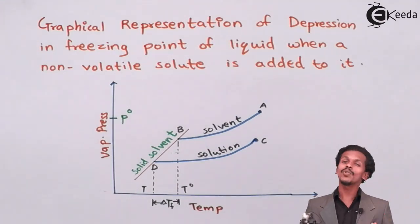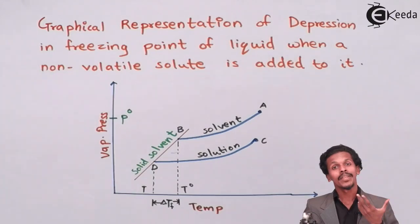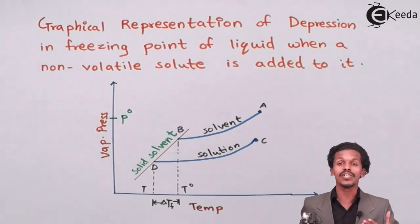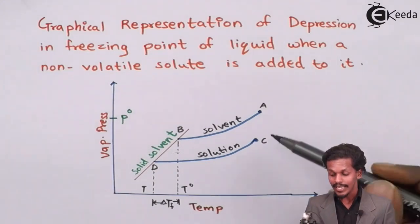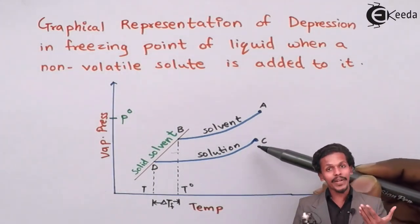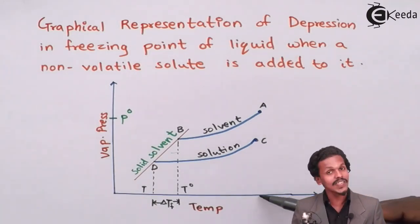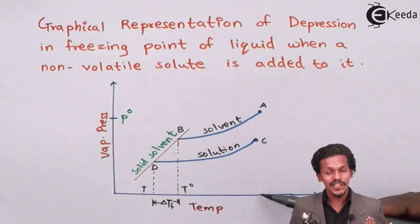Now let us talk about a solution. As we know earlier, the solution will have a vapor pressure less than that of a pure solvent. Therefore, this point C represents the vapor pressure at the same temperature itself for the solution.